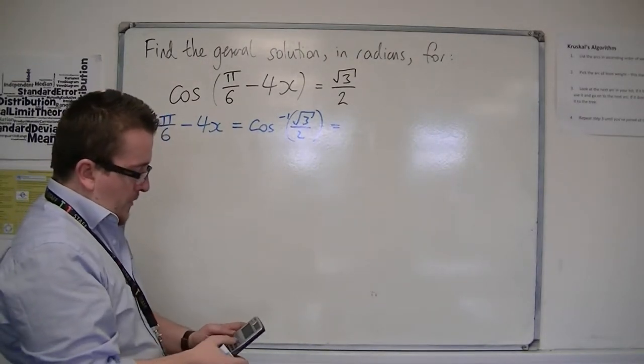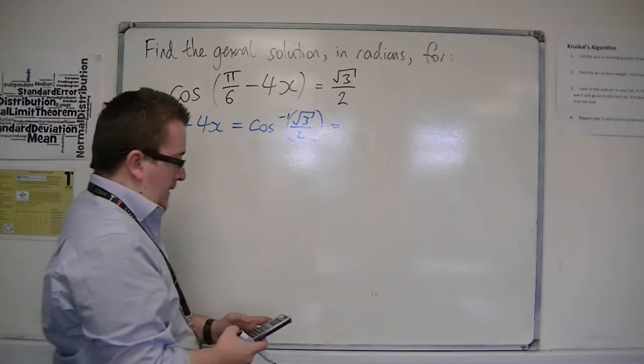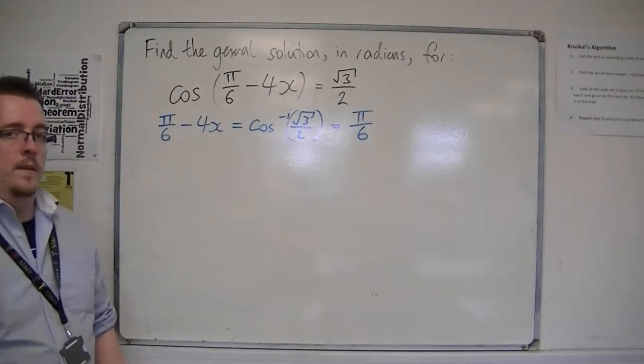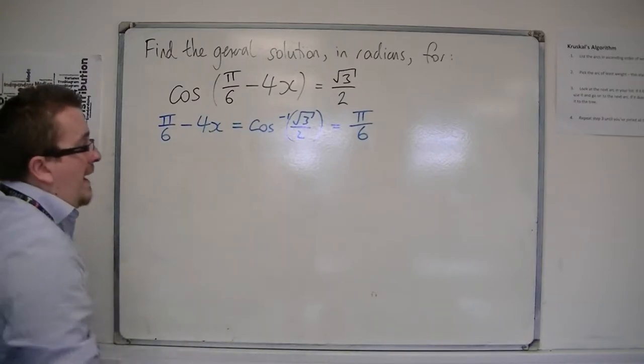So inverse cos of root 3 over 2 is pi over 6. That's your value of alpha.